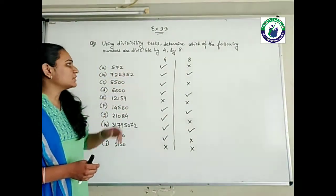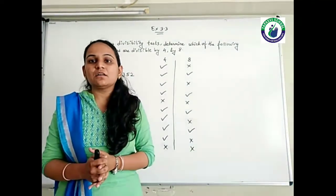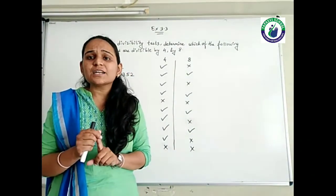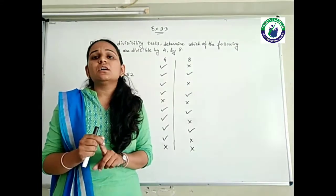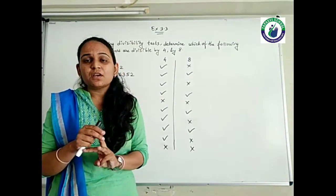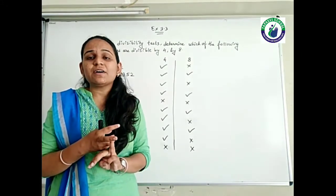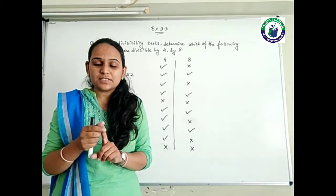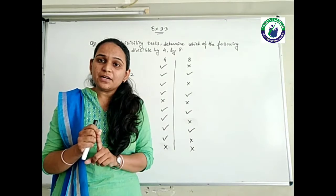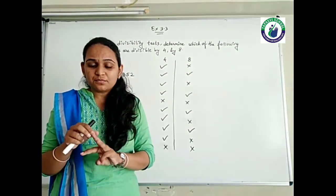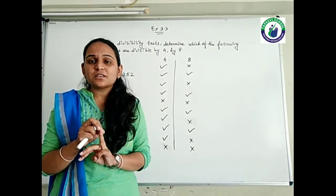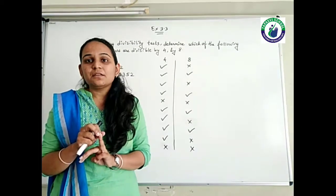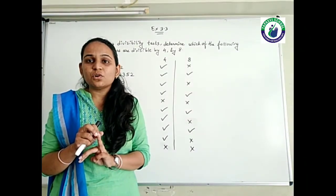The first number is 572. There are three rules in divisibility of 4 as well as 8. For 4, the rule is: last two digits should be divisible by 4. Second, last two digits should have 0. Or third rule: divide the entire number by 2, two times. Similarly for 8: last three digits should be divisible by 8, last three digits should have 0, or divide the entire number by 2, three times.